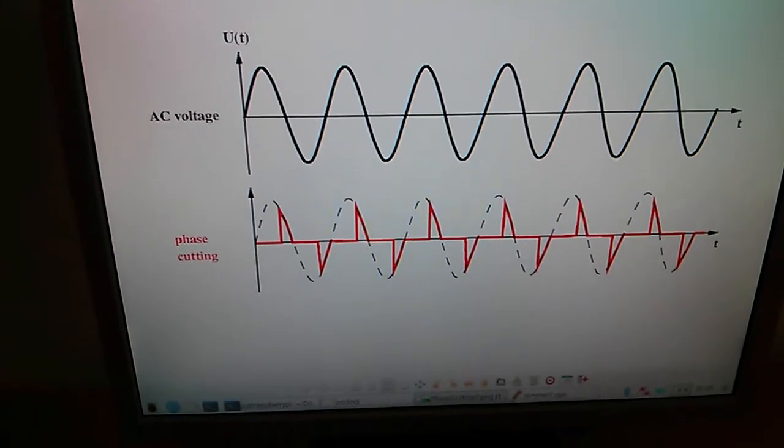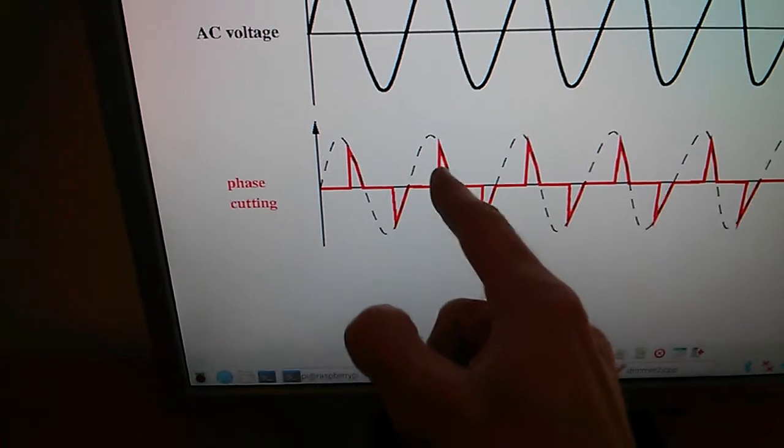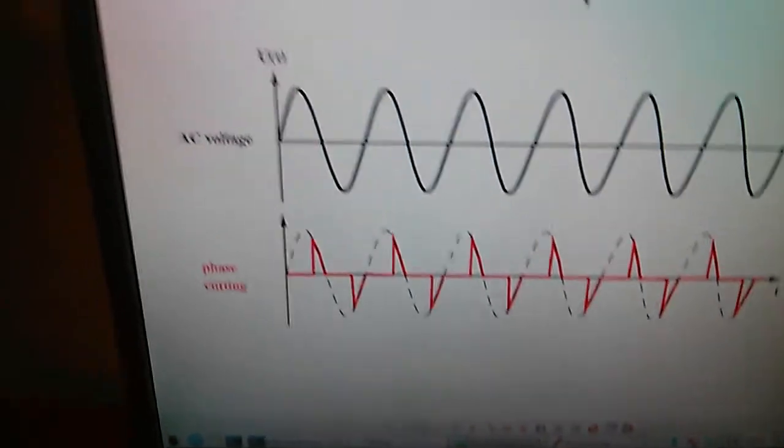So the task for our Raspberry Pi is to give this trigger, this ignition pulse to the triac at the right time.